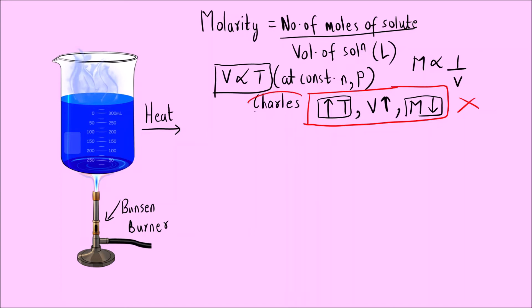Why? Because first thing is that this Charles Law, it is applicable only for ideal gases. It is applicable to ideal gases. And here we are talking about a solution. Solution having a solid solute and solvent is a liquid that is water. Let us say sugar dissolved in water.